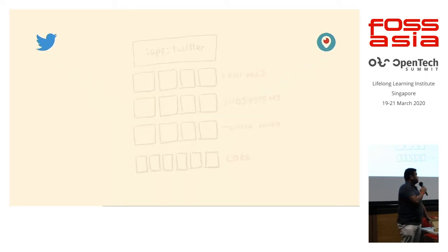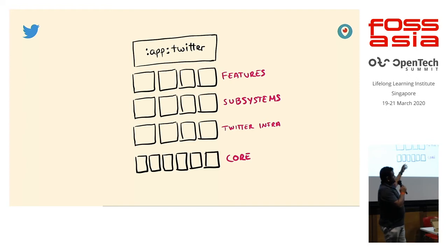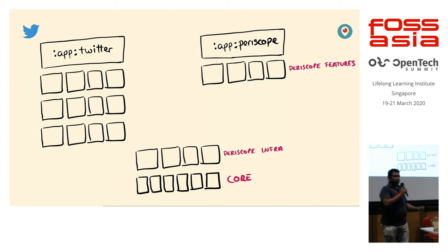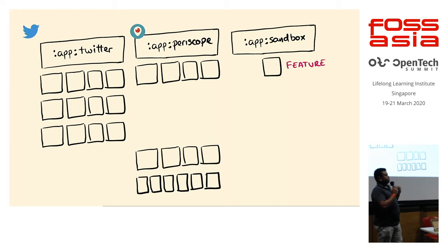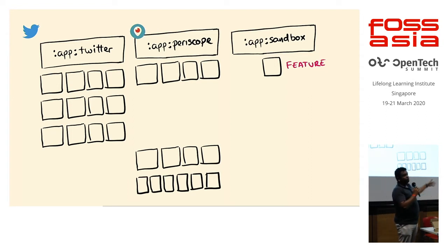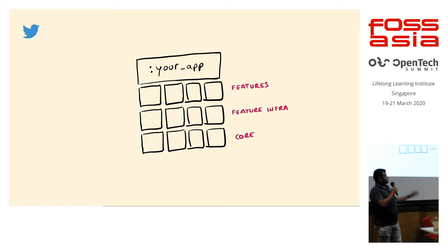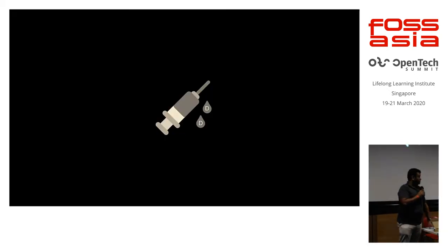We acquired Periscope, and as we welcomed the Periscope team we wanted to help them build their Android app with the same architecture. We found it was actually rather easy at this point because we could share core logic that wasn't Twitter-related and build Periscope on top of that. A team started building their own sandbox so they could work on just the feature they wanted without building the entire app, which drastically helped with build times and let them iterate quickly.